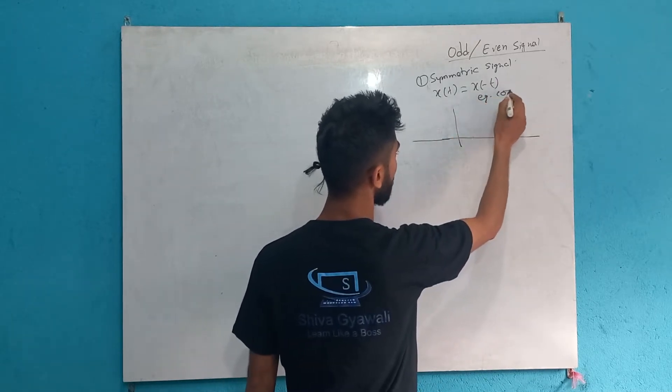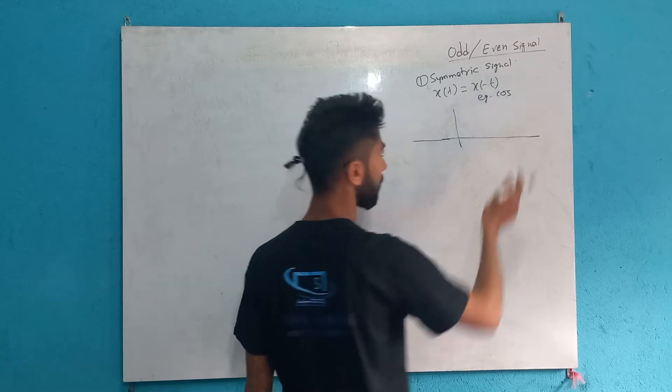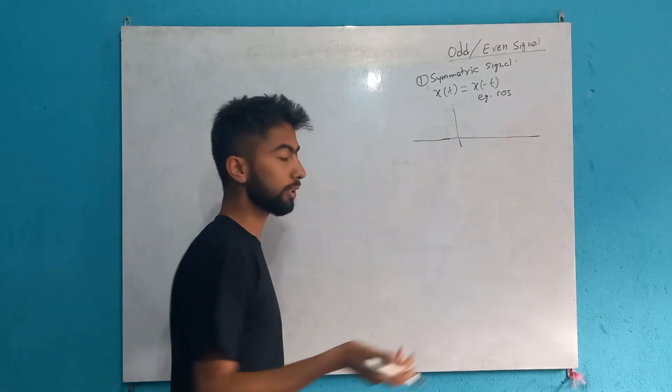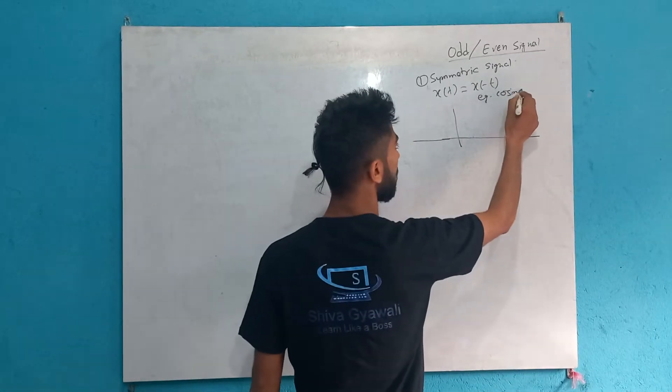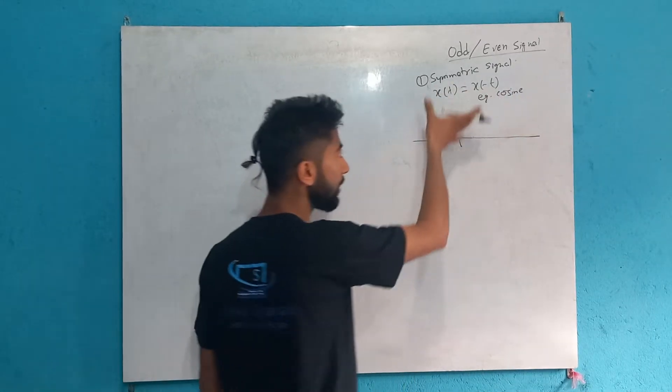For example, the cosine function — the cosine wave — is a symmetric signal.